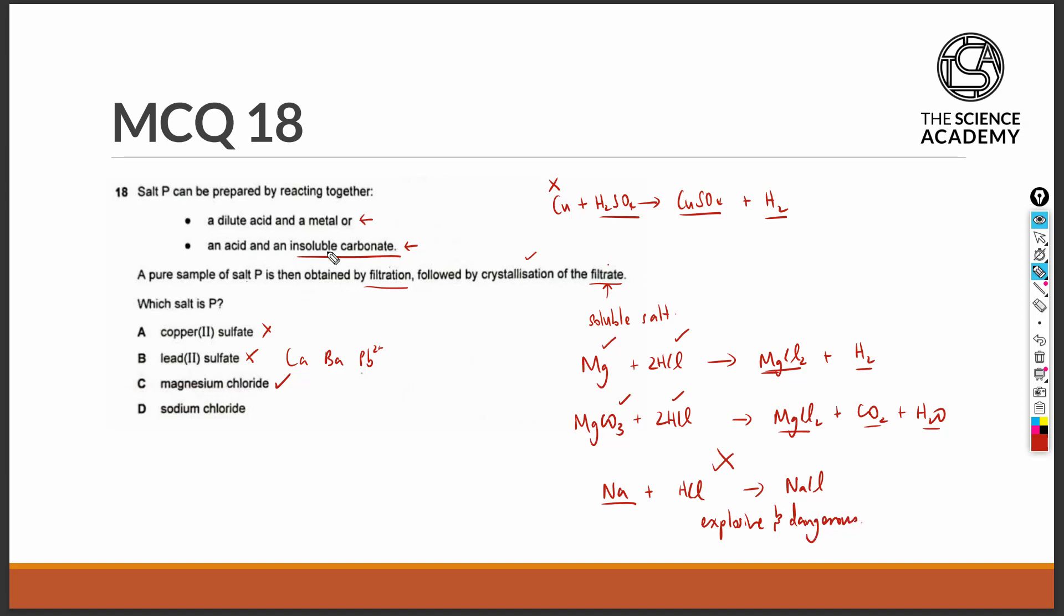Using the second method, by reacting an acid with the insoluble carbonate, the carbonate would have been sodium carbonate with the acid hydrochloric acid in order to produce the salt of NaCl. We realize that this carbonate is not an insoluble carbonate because all group 1 compounds are going to be soluble. Therefore, the second method is also not applicable for the production of sodium chloride.